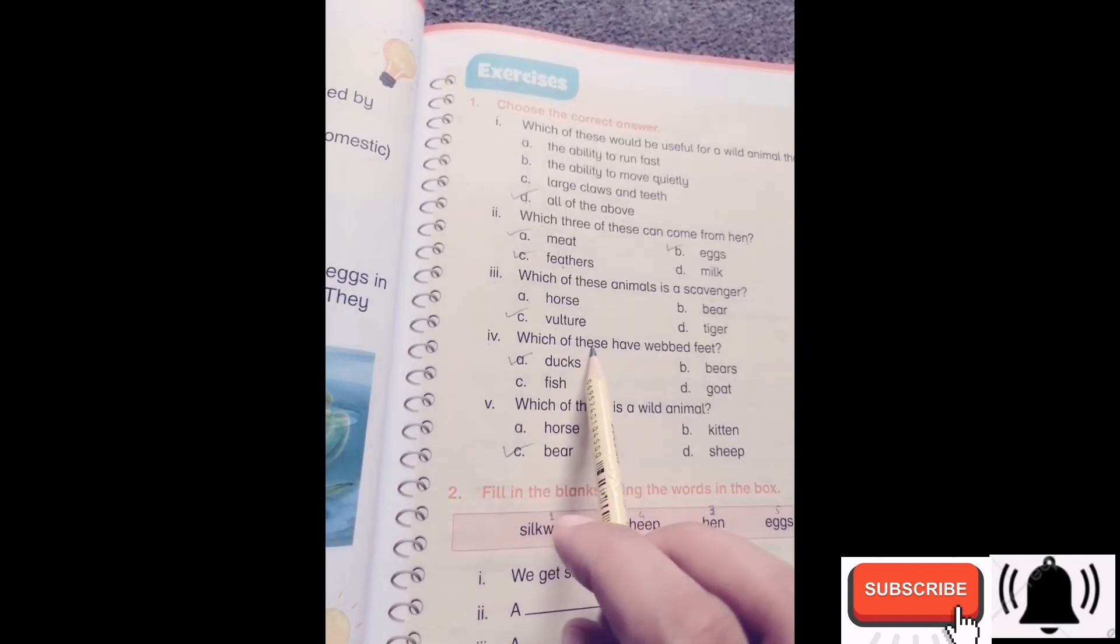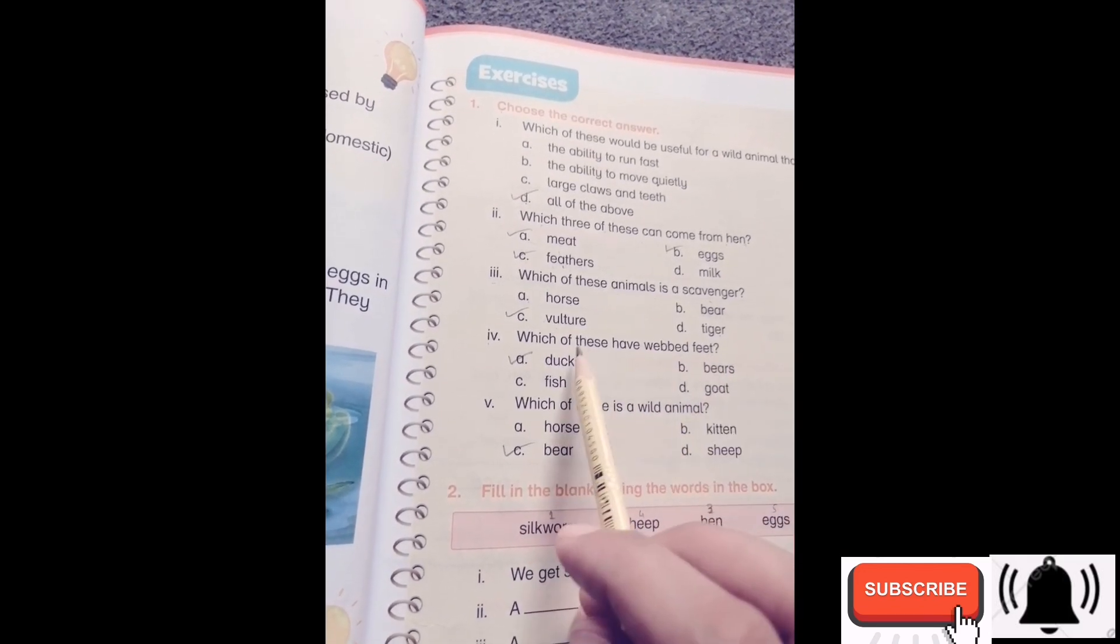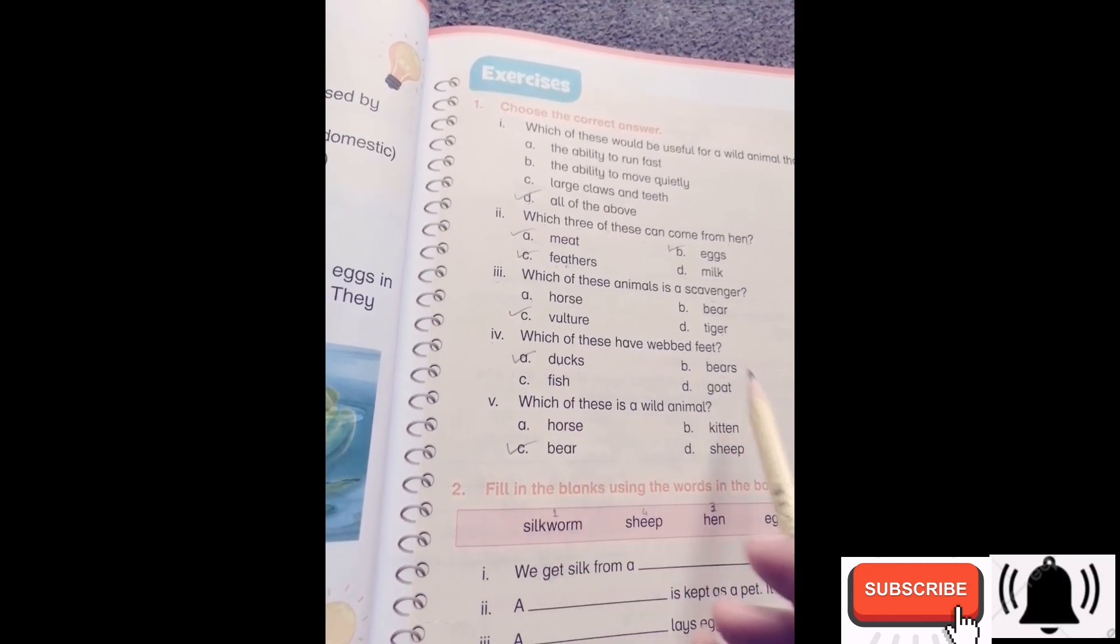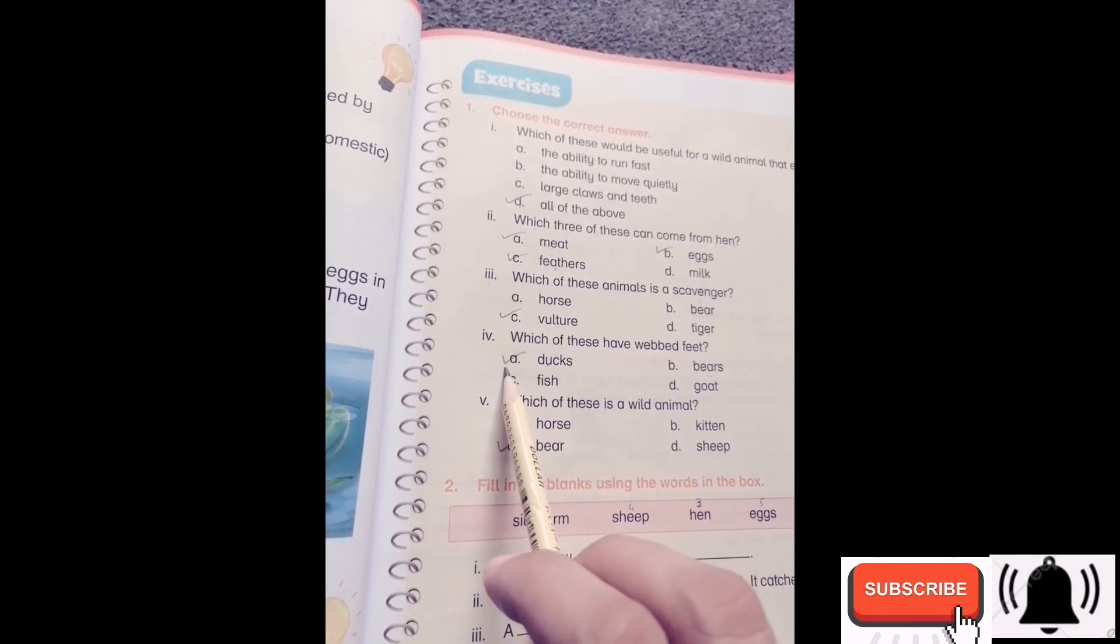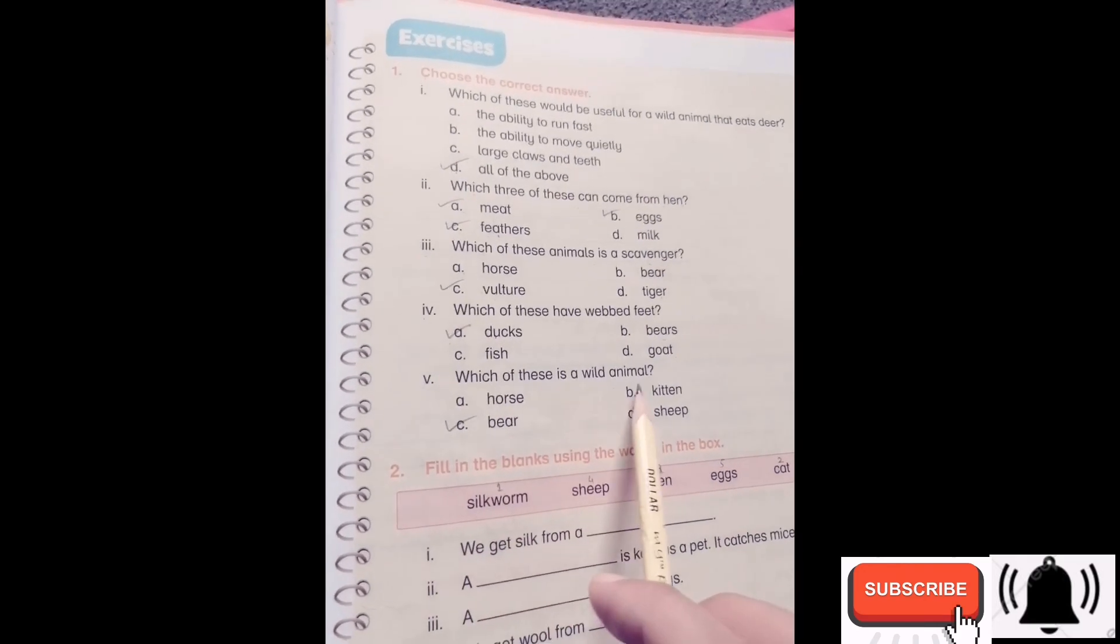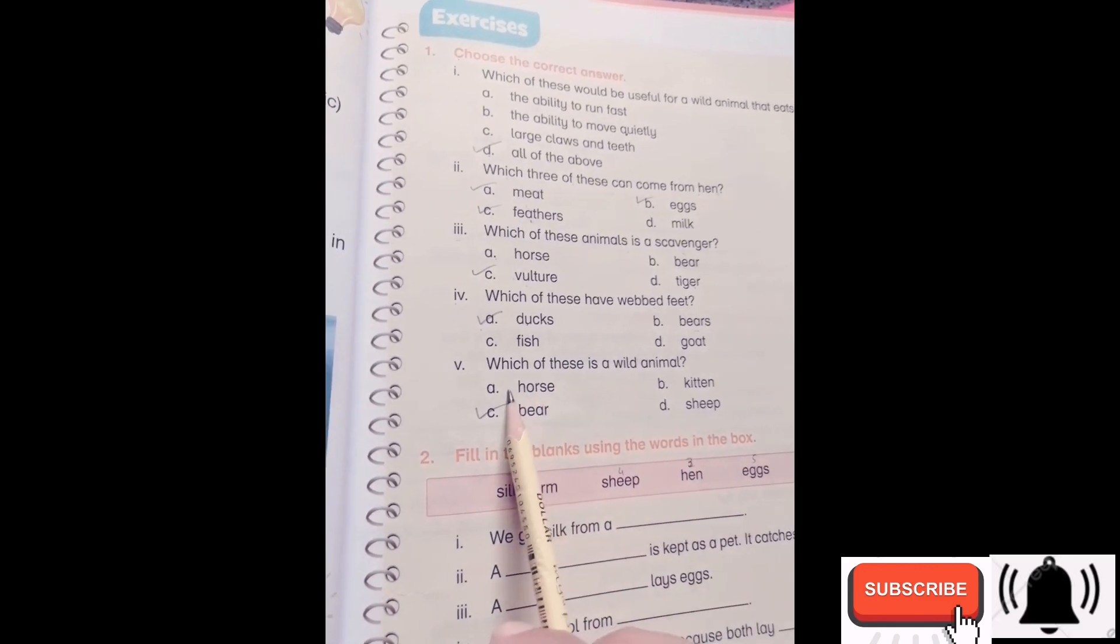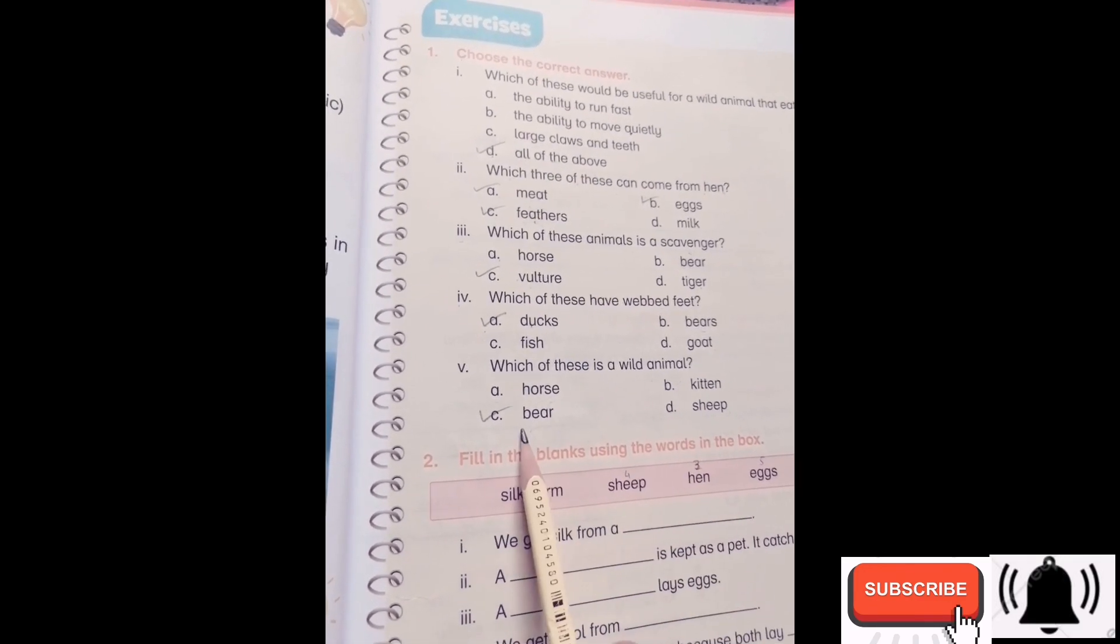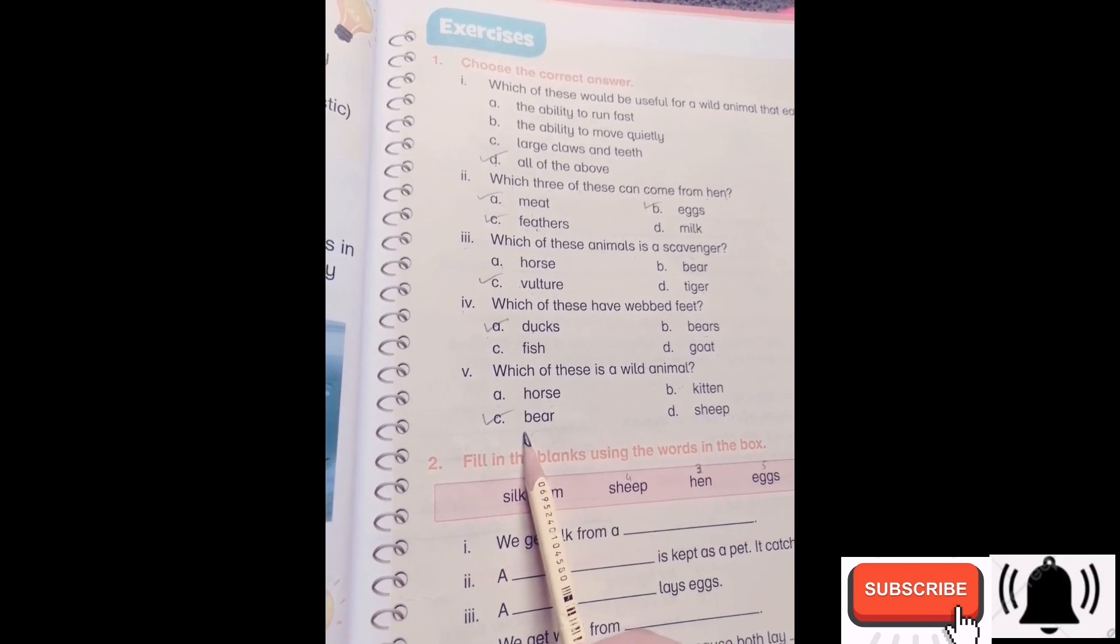Who has webbed feet? Bears, fish, goat? Correct answer is option A, ducks. Number five, which of these is a wild animal? Who is a wild animal? Horse, kitten, bear, sheep? Correct answer is option C, bear.